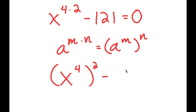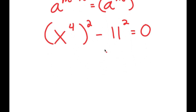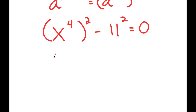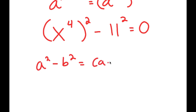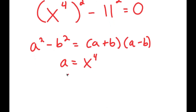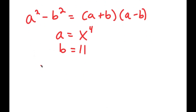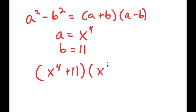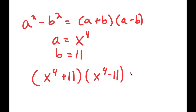We also have minus 121, which we can rewrite as 11 to the power of 2. We can now use an important algebraic property: if I have something in the form a squared minus b squared, this is equal to a plus b times a minus b. So in this case, a is x to the power of 4 and b is 11, giving us x to the power of 4 plus 11 times x to the power of 4 minus 11, which equals 0.